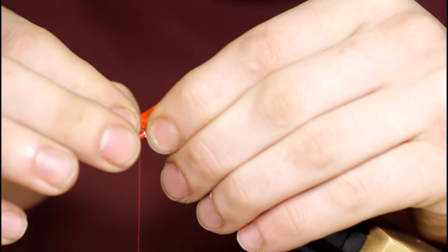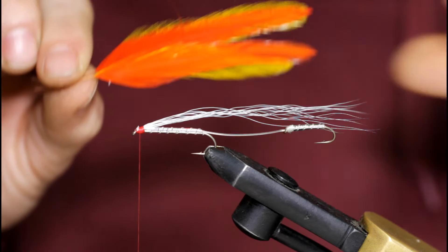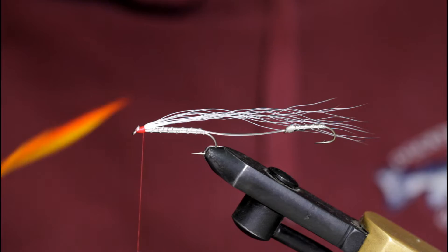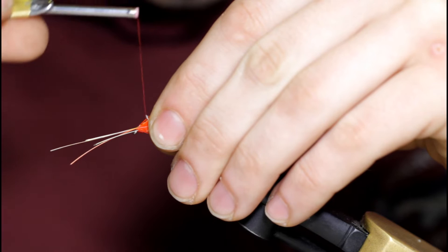I'm going to grab some duco cement. Put a little drop at the base of the yellow feather here. I'm going to stick the orange one on top of the yellow. So I've got both pairs done here. I'm going to bring them in. Tie them in at the same time. Just a few turns over the top here.